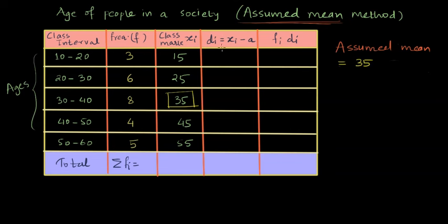Now we are interested in finding the deviation or dᵢ for each class interval. So for class mark 15, this 35 is nothing but A. So the deviation will be that class mark minus the assumed mean. So in this case, it will be 15 minus 35, which is minus 20. Similarly, if we keep on doing the same process, 25 minus 35 gives minus 10. Then 35 minus 35 is simply zero, 45 minus 35 we get 10, and for 55 minus 35 we get 20.